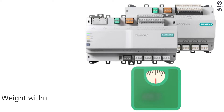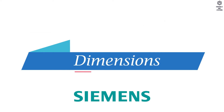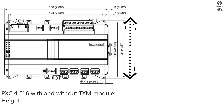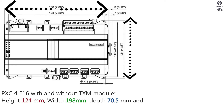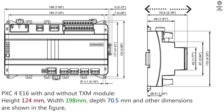Weight without packing is 483 grams, weight with packing is 553 grams. Dimensions for PXC4E16 with and without TX module: Height 124 mm, Width 198 mm, Depth 70.5 mm; other dimensions are shown in the figure.